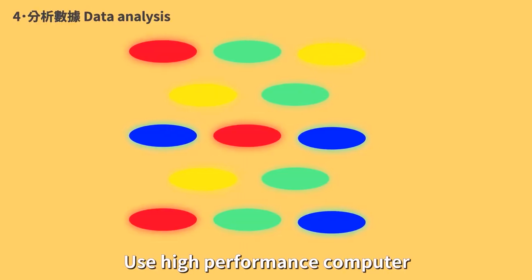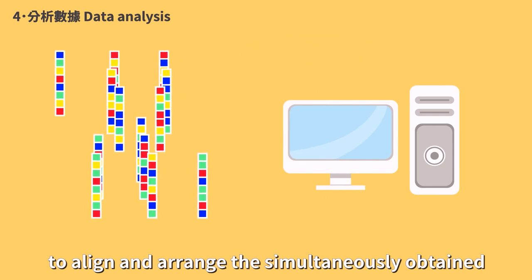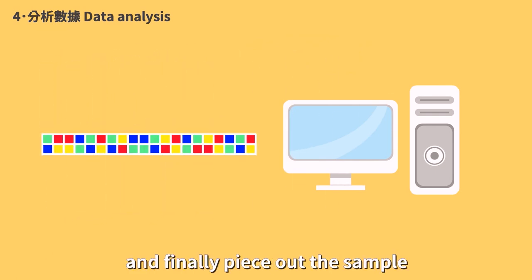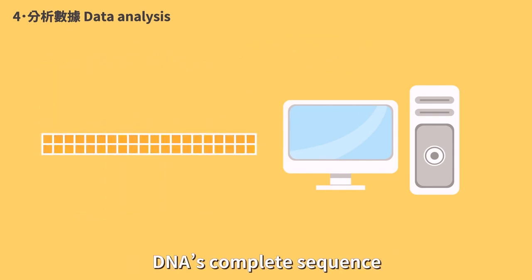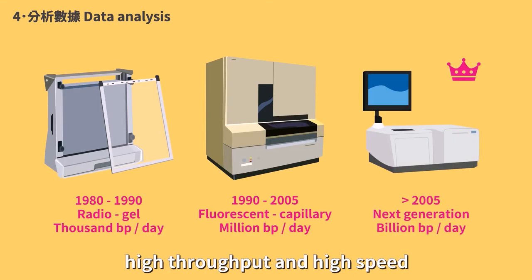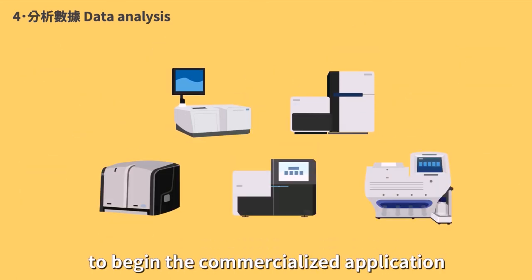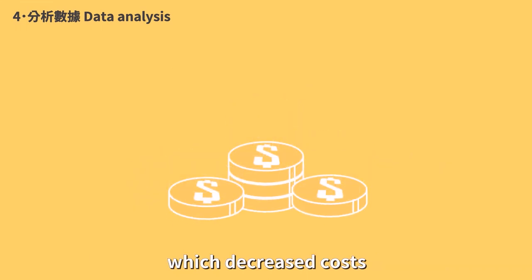Step 4: Data Analysis. Use high-performance computers to align and arrange the simultaneously obtained base sequences, and finally piece out the sample DNA's complete sequence. Due to next-generation sequencing's high throughput and high speed, many companies were attracted to invest into the technology to begin commercialized application, which decreased costs.